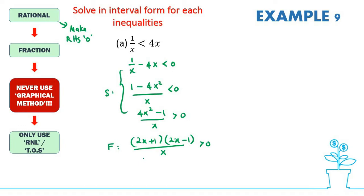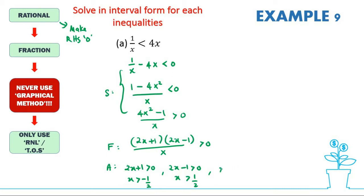Follow the FARSPE method. F is factorization. A is assuming all factors to be greater than zero. Since there's no equal sign here, we have: 2x + 1 > 0 gives x > −1/2; 2x − 1 > 0 gives x > 1/2; and from the denominator, x > 0.